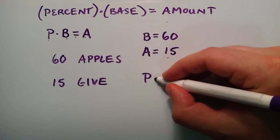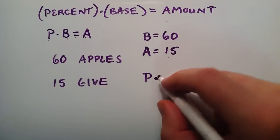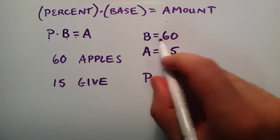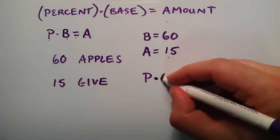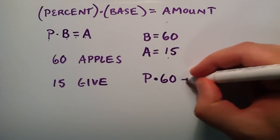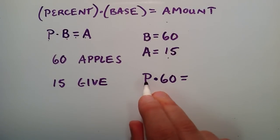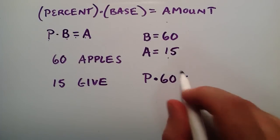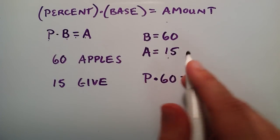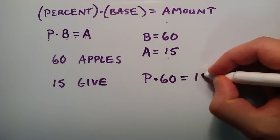So we don't know what our percentage is, so we're just going to call it P for now. And then we want to multiply that by our base, and B we said was equal to 60, that's our base. And the result of taking a percentage of that number is equal to the amount of apples that we gave away. So this is equal to 15.